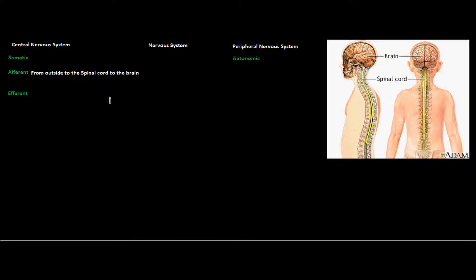Afferent signals are very different from efferent signals, because efferent signals often refer to signals that come from the brain, travel down the spinal cord, and are used in order to produce movement. One word I want to talk about before we get into efferent is the word 'stimulus,' because it all starts with stimulus when we talk about afferent. A stimulus can be a touch, can be a sound — it really refers to anything that activates a receptor in order for the brain to be aware of it.